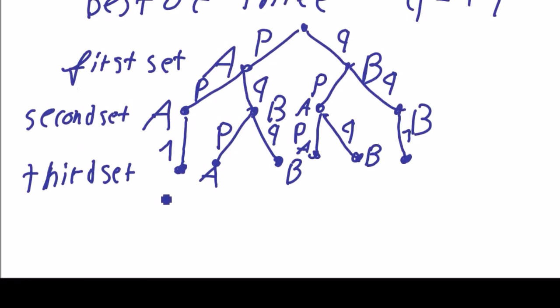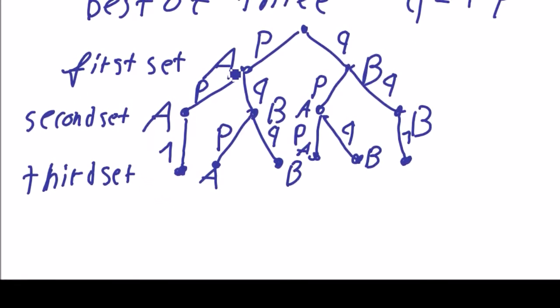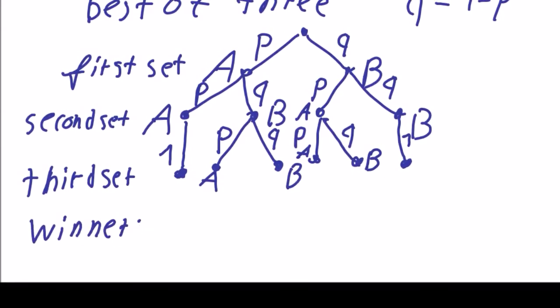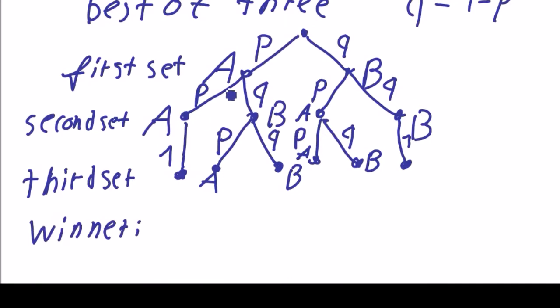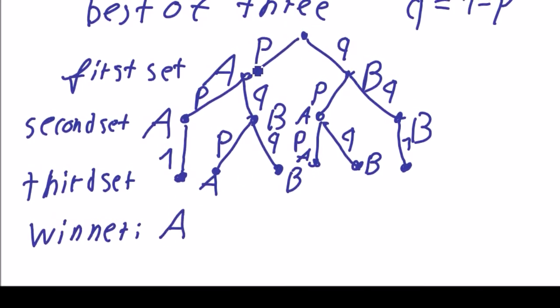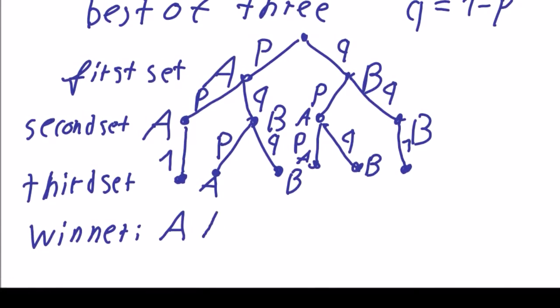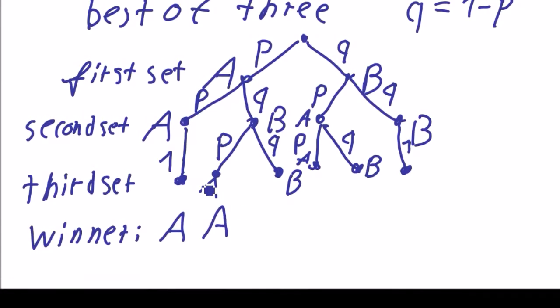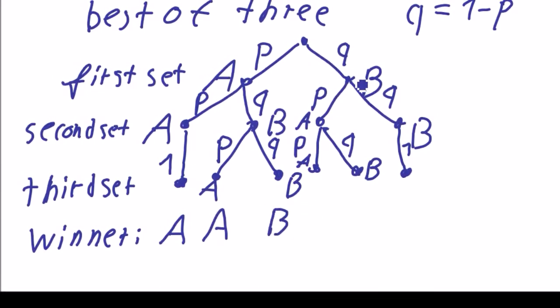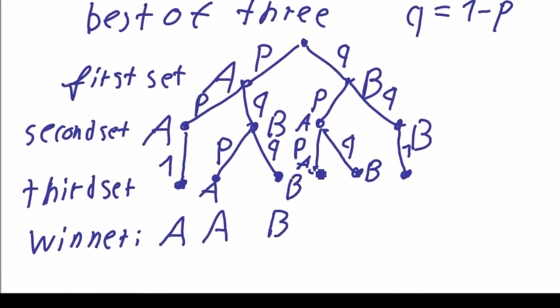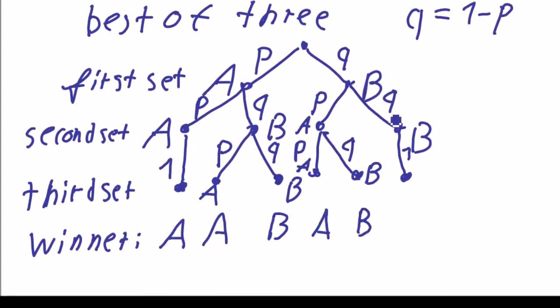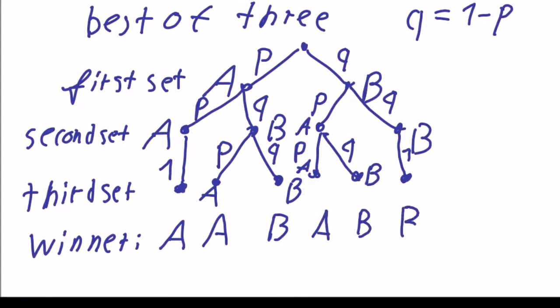Now we can state who is the winner in each case. So the winner of this line is A of course. And here we have also A because A won the first and the third set. Here the winner is B, and along this line the winner is B. Along this line the winner is B and along this line the winner is B.